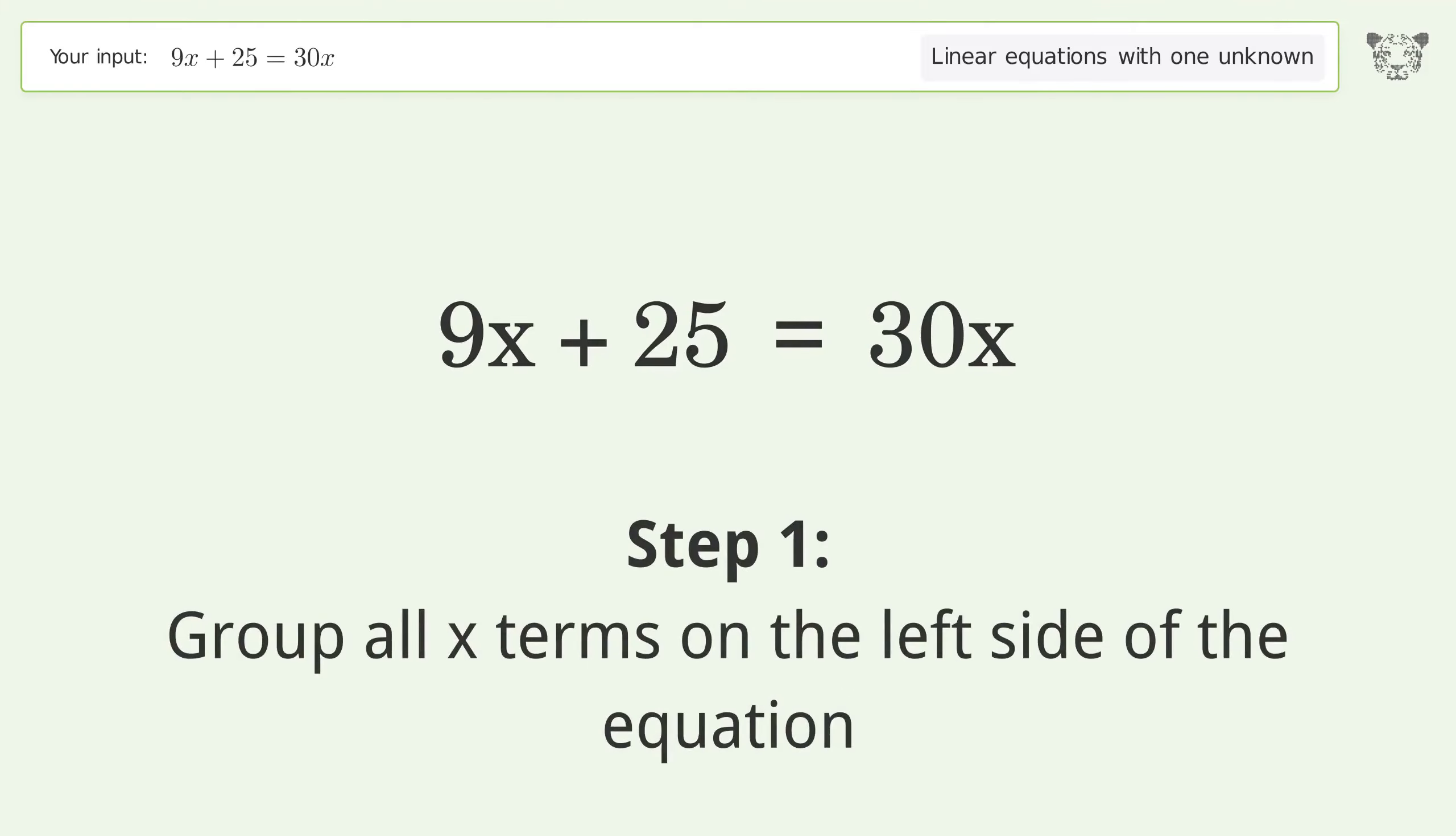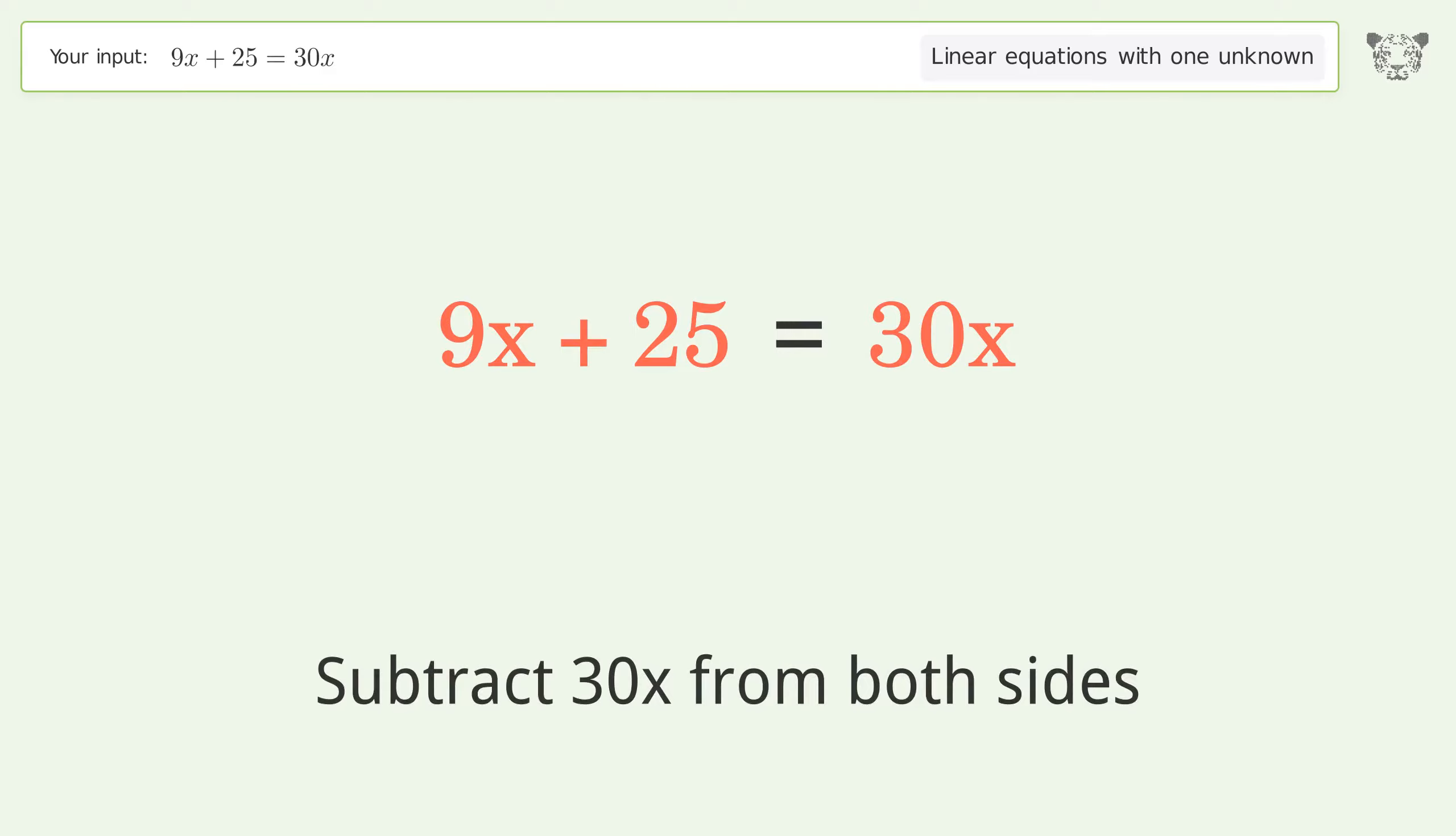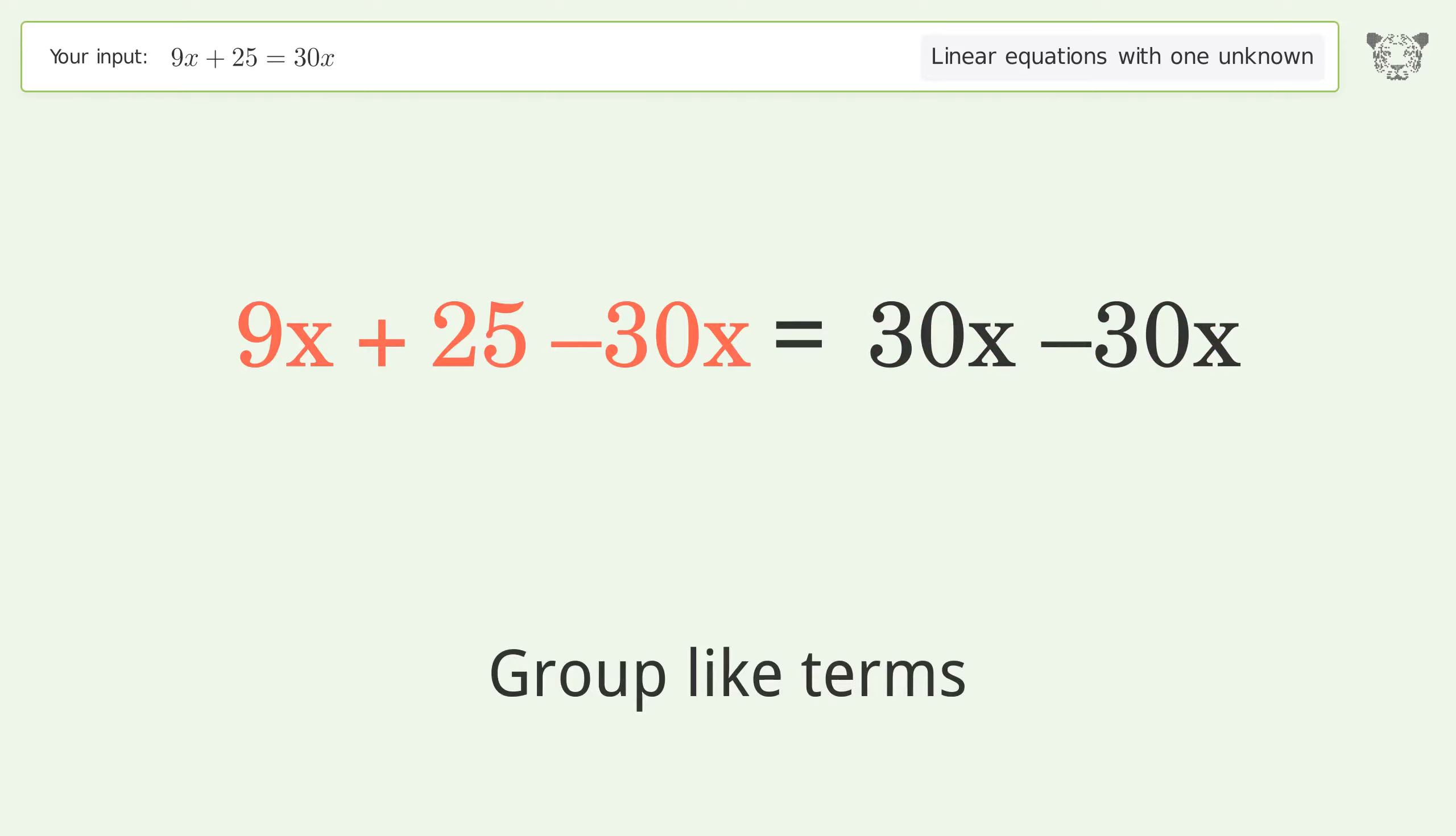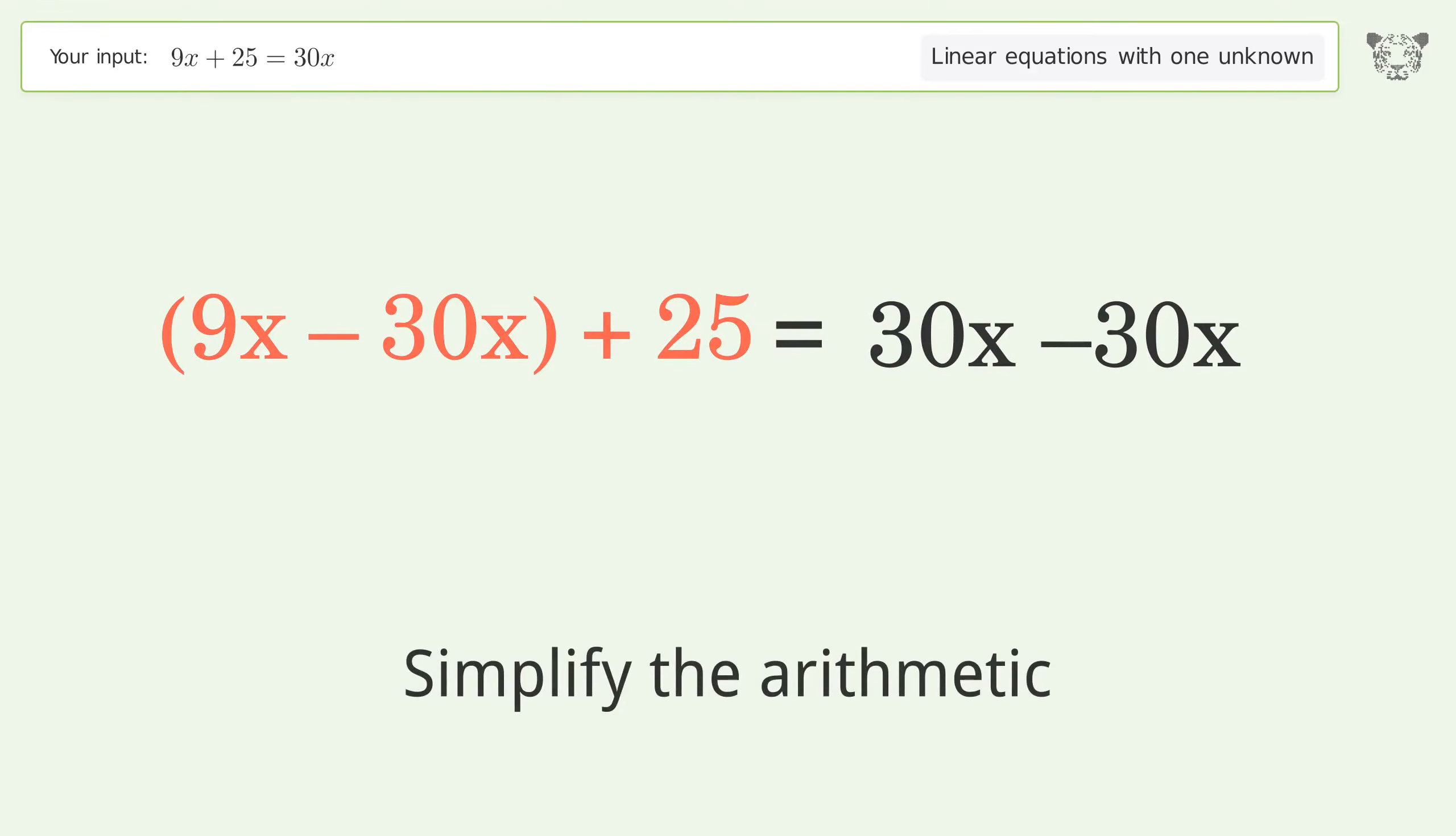Group all x terms on the left side of the equation. Subtract 30x from both sides. Group like terms. Simplify the arithmetic.